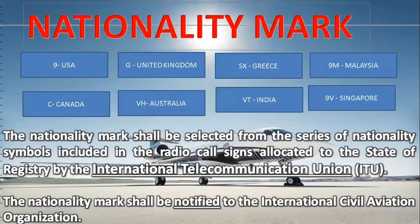The nationality mark shall be selected from the series of nationality symbols included in radio call signs allocated to the state of registry by the International Telecommunication Union. The aircraft registration consists of two parts: prefix which is nationality, and suffix which is registration. Examples of prefixes representing nationality include: the number 9 allotted to the US nation, letter G allotted to the United Kingdom, VT — two letters — allotted to India, and 9M — an alphanumeric character — allotted to Malaysia. The nationality mark shall be notified to ICAO.